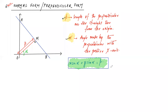We call it the normal or perpendicular form because we use the normal (perpendicular) distance of the line from the origin. This equation is very important. To recap: from the origin we drop a perpendicular of length p to the straight line, and alpha is the angle that perpendicular makes with the positive x-axis. Substituting p and alpha into x·cosα + y·sinα = p gives the required equation.